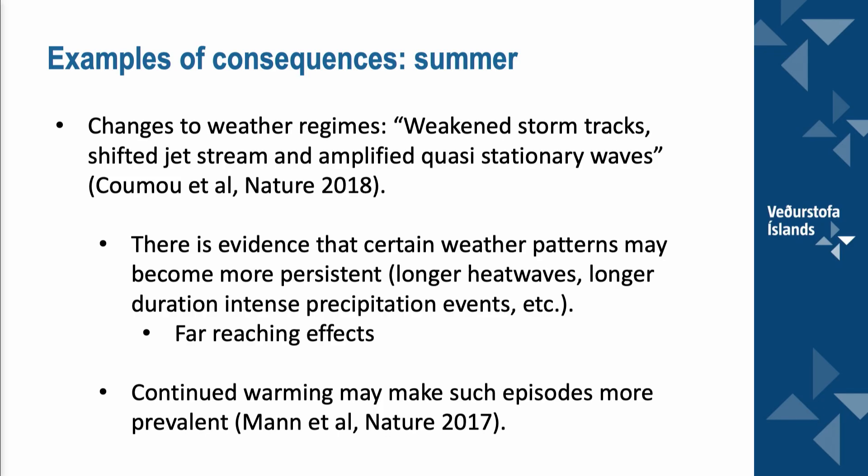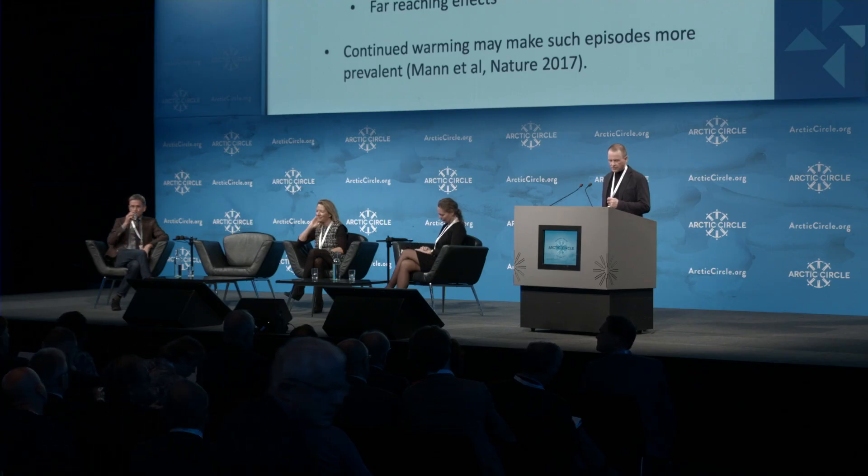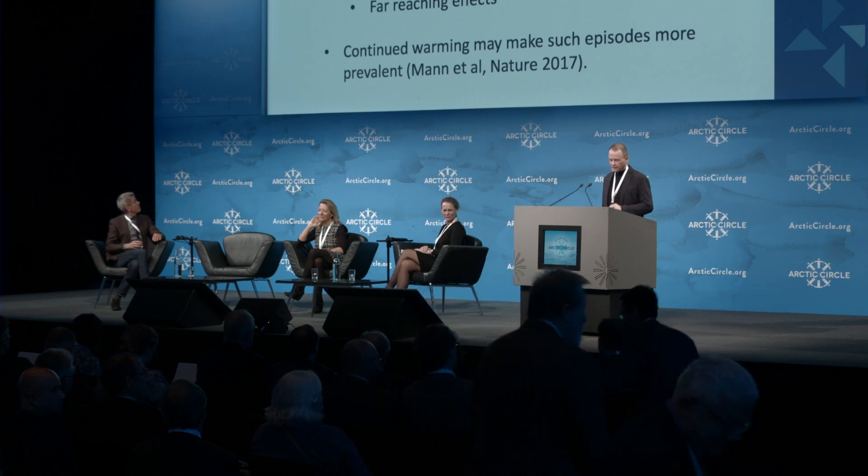Another example of consequences involves the summer. The summertime consequences are in some ways easier to quantify than the wintertime ones, partly due to the work of colleagues at Stefan's institute — Petoukhov and others — who developed a theoretical framework called quasi-stationary resonance, or QRA. The good thing about a theoretical framework is that you can test it and make testable predictions. There is evidence that certain weather patterns may become more persistent: longer heat waves, longer-duration intense precipitation events. Continued warming may make such episodes more prevalent, as published in a recent article in Nature.